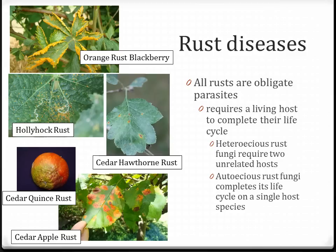There are other rusts that we commonly see. If you've ever grown hollyhocks, you'll notice hollyhock rust is very common. We also have a number of cedar-related rusts, meaning the cedar tree is one of the required hosts. In the center picture, cedar hawthorn rust is shown on hawthorn. Cedar quince rust can actually affect apples and is usually seen on the bottom side of the fruit. The fruit tree would have shown symptoms on the leaf somewhat similar to what the cedar apple rust pictures show in the lower center.